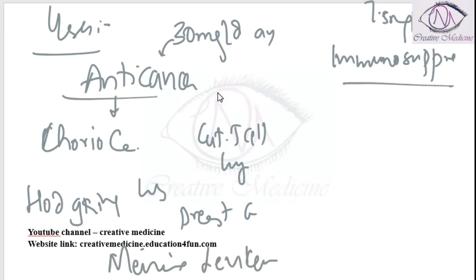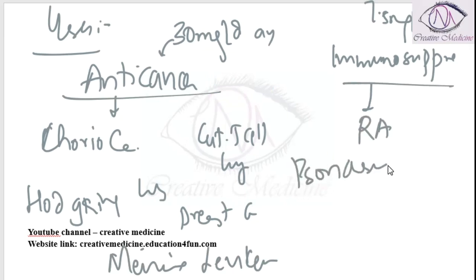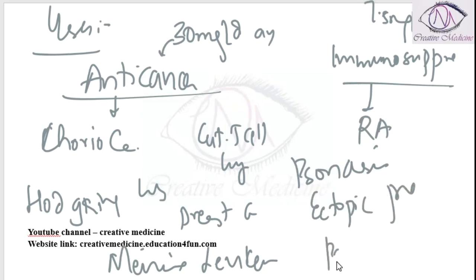Immunosuppressant uses of Methotrexate at 7.5 mg per day include rheumatoid arthritis, psoriasis, ectopic pregnancy, and pseudomyxoma peritonei.